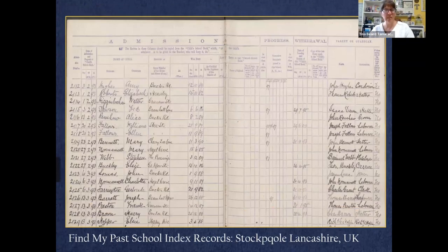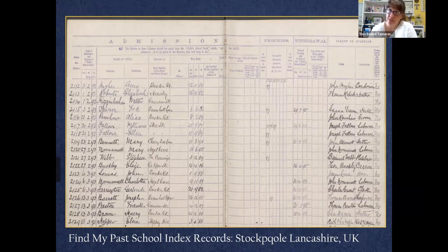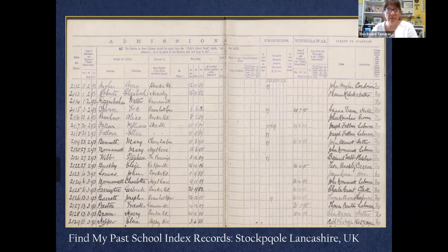Find My Past also has school records. The U.S. hasn't done a great job making school records available online, but Find My Past made them available for British schools. Here's one page from the Fogg family — it gives the student's name, exact birth date, their level and class, and the father's name and occupation. These are done every year, so instead of waiting 10 years for a census, you have records year after year. You can see new students start, students age out, and families move. Wonderful records.